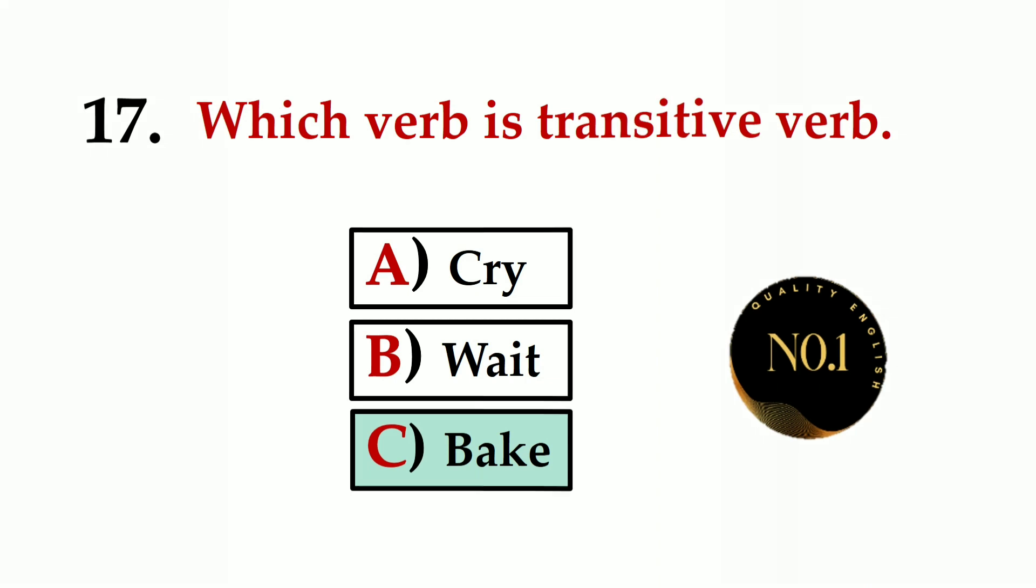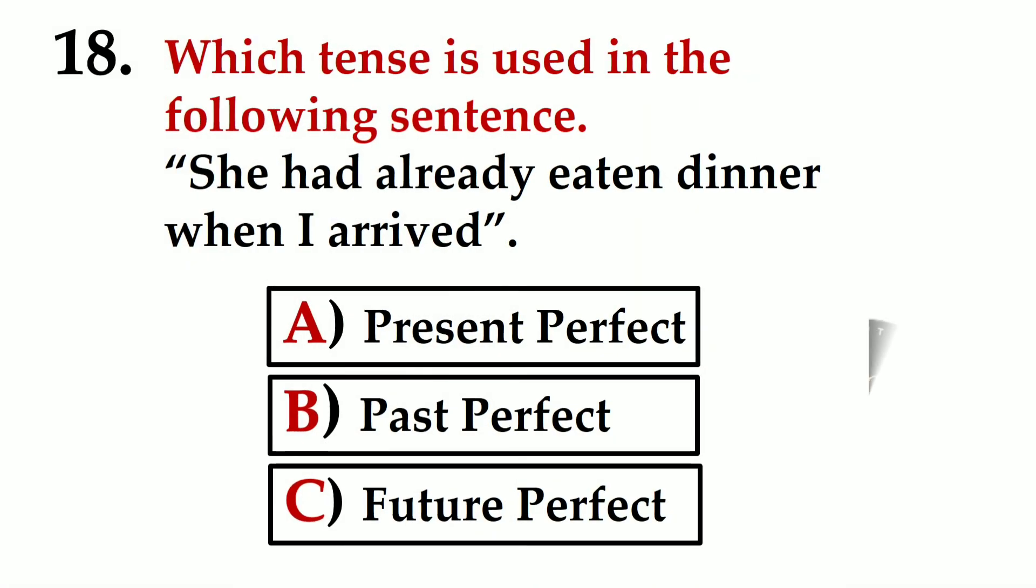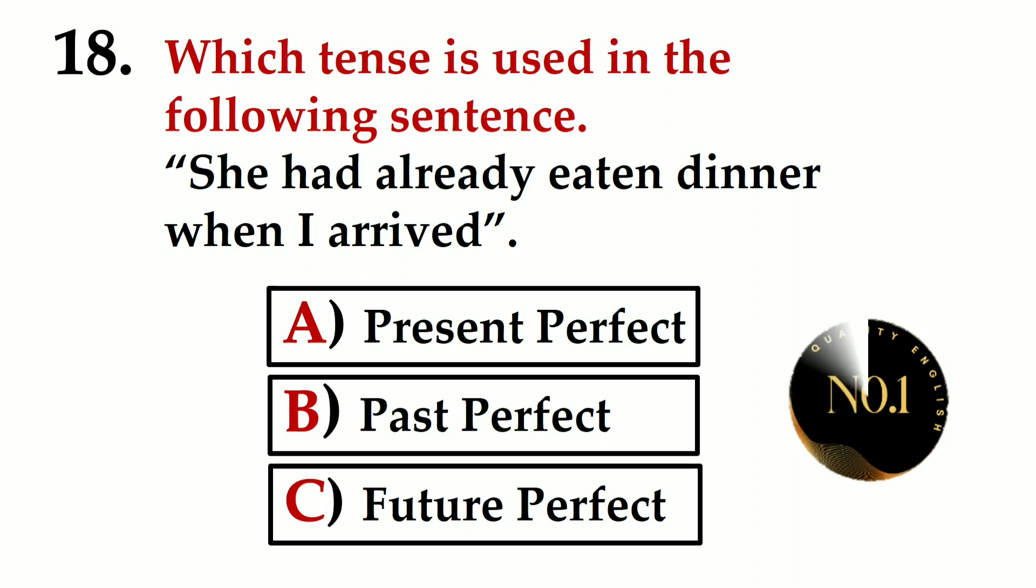Number eighteen: Which tense is used in the following sentence 'She had already eaten dinner when I arrived'? A) Present Perfect, B) Past Perfect, C) Future Perfect. The correct option is B) Past Perfect.